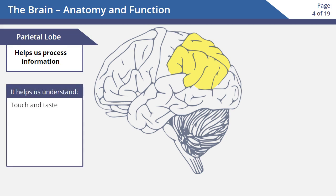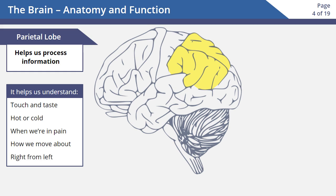The parietal lobe helps us understand what we touch and taste, and how we tell if it's hot or cold outside. It also helps us know when we're in pain, if someone or something is pressing down on us, and how we move about in our world. It helps us tell our right from our left.